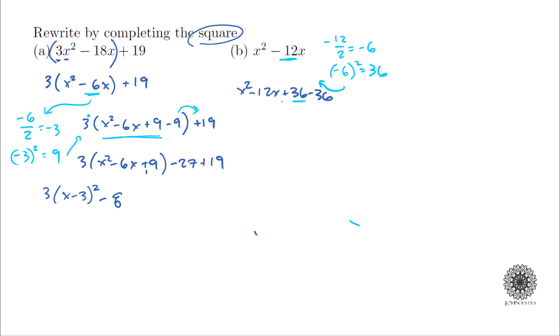Now just as before this part will factor very simply as x minus 6 quantity squared and then I have a minus 36 at the end. You can verify that this works by just expanding out what you have already.